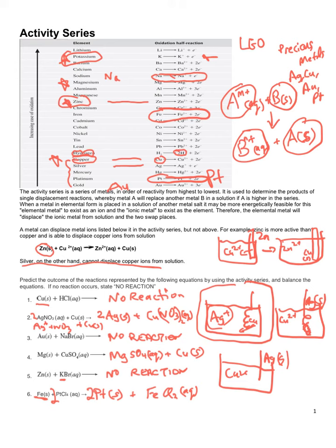The activity series can be confusing, but think about where things are on the chart: the higher up, the more it wants to become or stay as an ion; the further down the chart, the more it wants to become or stay as the pure metal. Use your everyday chemistry knowledge — copper, silver, platinum, and gold want to be metals because they're used in jewelry. Thanks so much for watching.